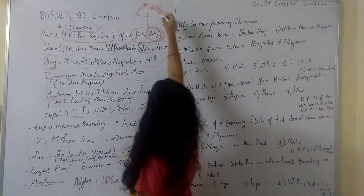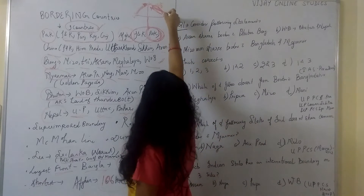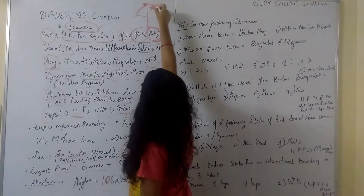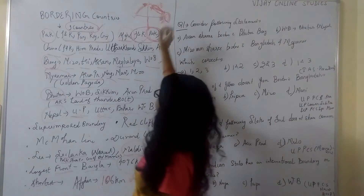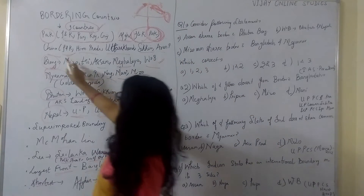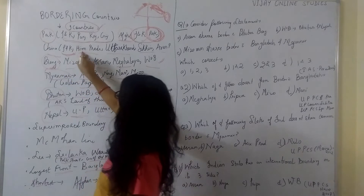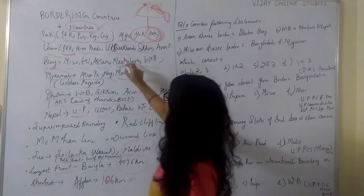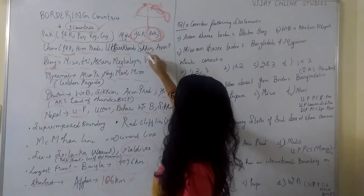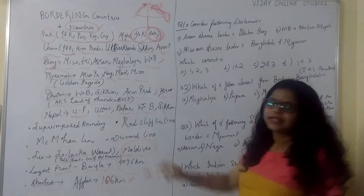Then China. China is in the north to east region. China borders GNK, Himachal Pradesh, Uttarakhand, Sikkim and Arunachal Pradesh.